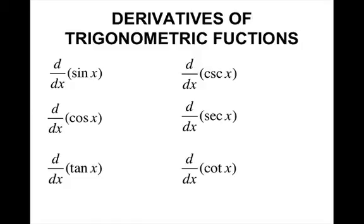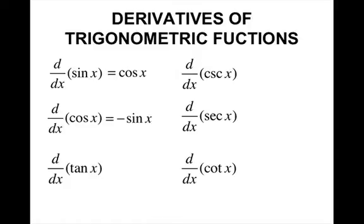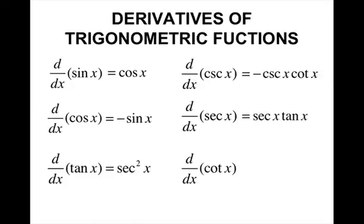Now I'm going to give you the derivatives of the trig functions. We did the derivative of sine x on your graded assignment through using the definition of a derivative, and all these are derived that way as well. The derivative of sine is cosine. The derivative of cosine is negative sine x. Derivative of tangent x is secant squared x. Derivative of cosecant x is negative cosecant x times cotangent x. Derivative of secant is secant times tangent. And the derivative of cotangent is negative cosecant squared x.